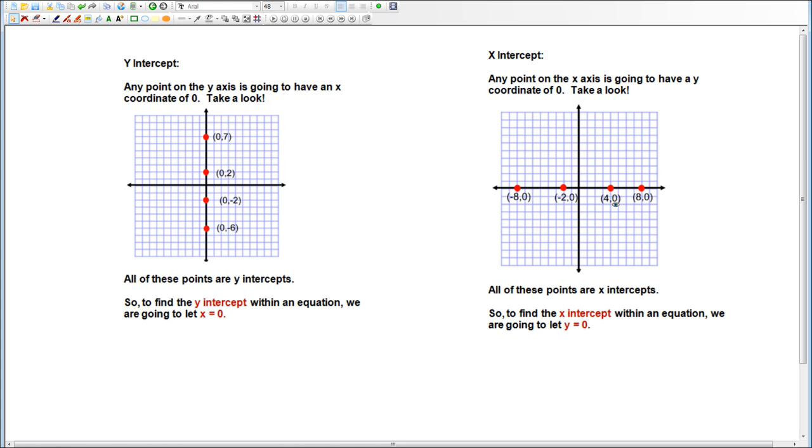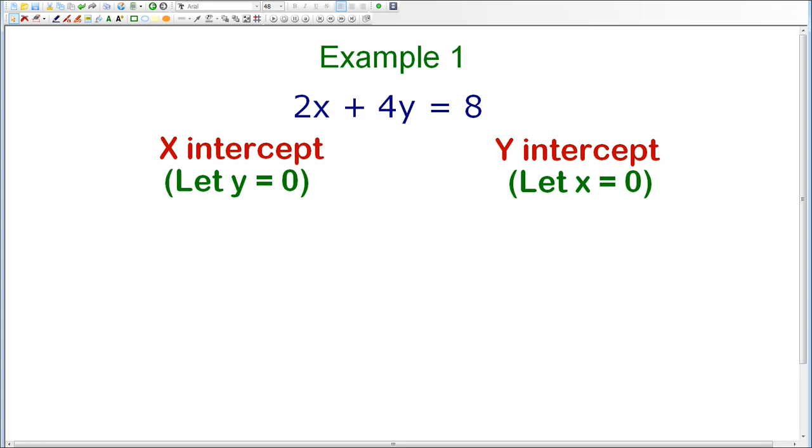So to find the x-intercept, we're going to let y equals 0. What we're going to do is take example number one from the website, 2x plus 4y equals 8, and we're going to find the x and y-intercepts in order to graph two points on a grid that we can then use to draw a line through to create the graph for this equation.